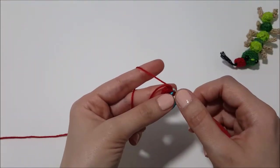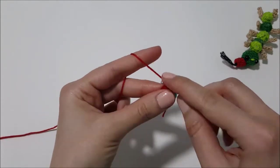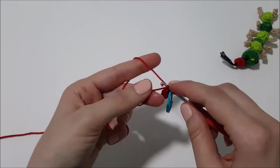Row 2 is a single crochet on the upper loop of the single crochet of the previous row. This is the upper loop and keep the tail inside.